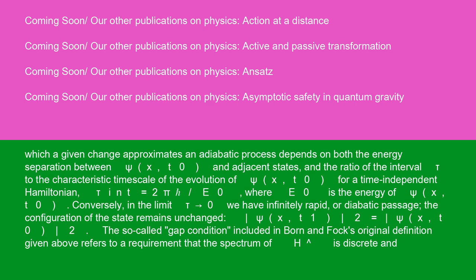Conversely, in the limit tau → 0, we have infinitely rapid, or diabatic, passage. The configuration of the state remains unchanged: |psi(x, T1)|² equals |psi(x, T0)|².